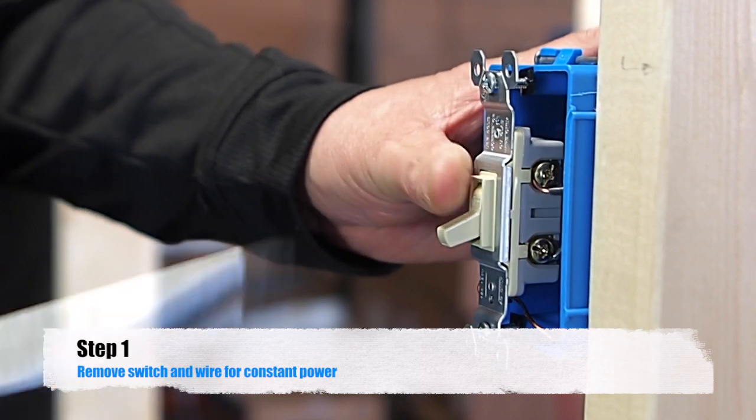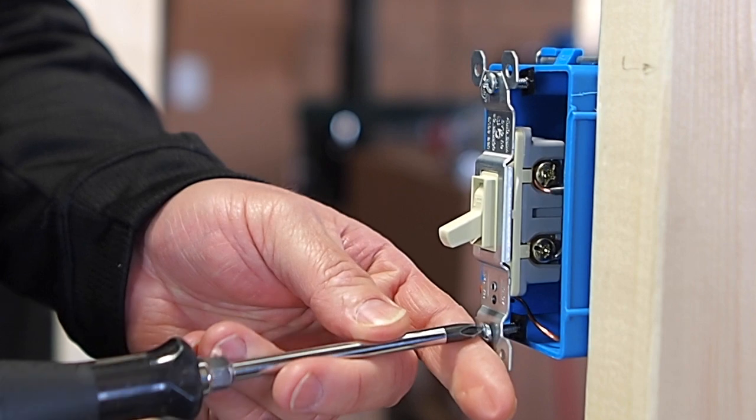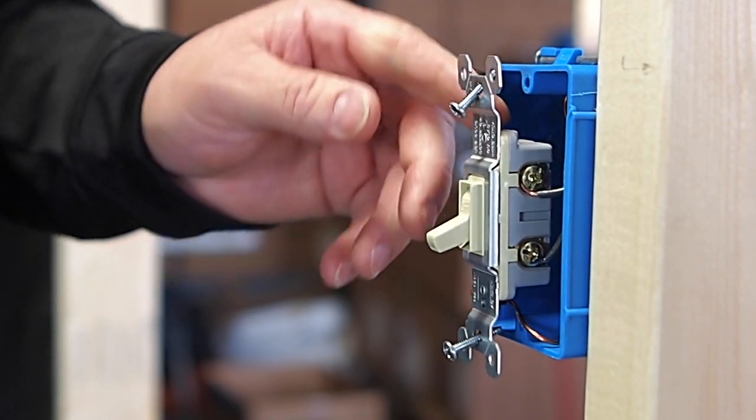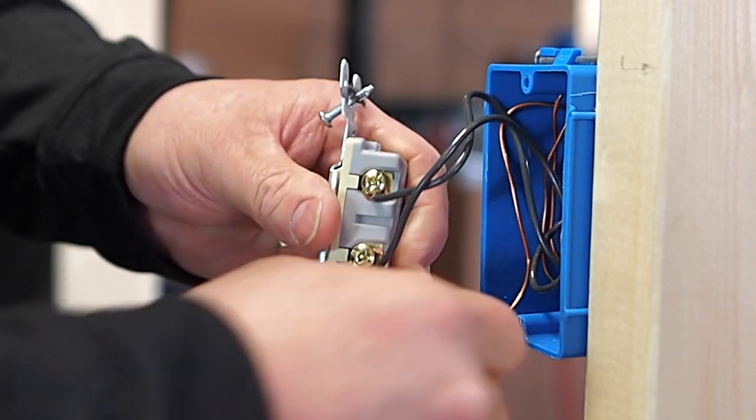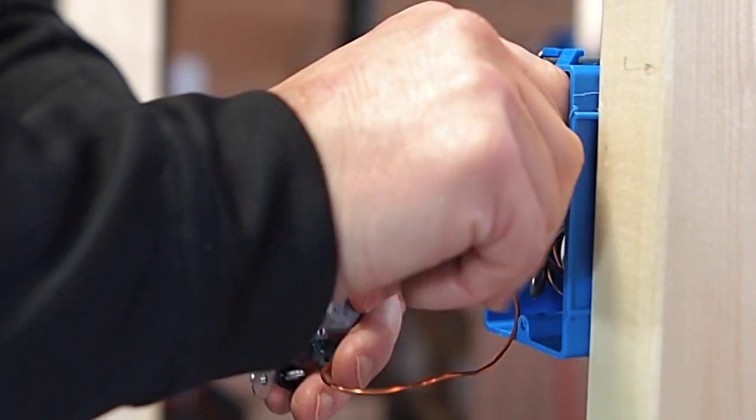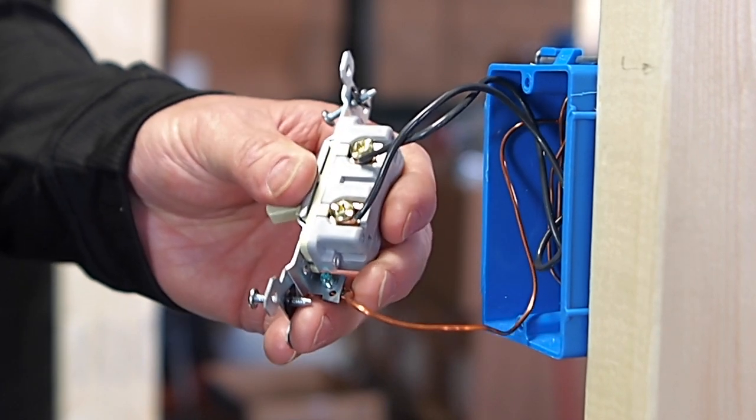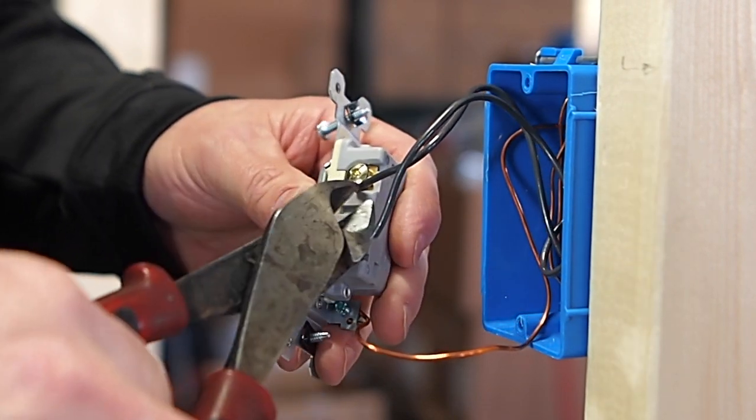So all we have to do in this scenario since we're going to use a motion sensor is just simply unscrew the switch out of the box. Our neutrals and ground are already pigtailed together, we're just simply going to come in here and cut these wires.